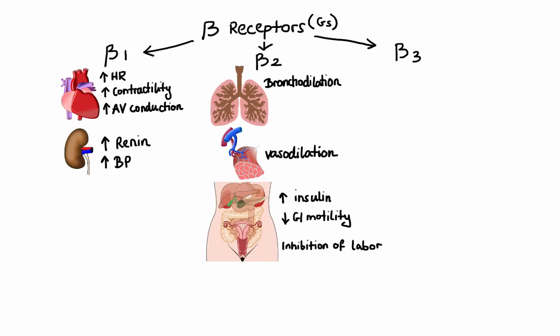Before we move on, let's not forget about beta-3 receptors. Beta-3 receptors are mainly located in adipose tissue, and when activated, they lead to increase in lipolysis — simply the breakdown of stored fat. Beta-3 receptors can also be found in the urinary bladder, and their activation there is thought to cause relaxation of the bladder and prevention of urination.